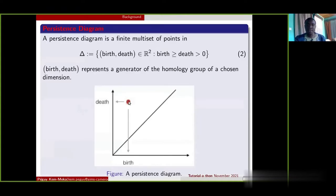So a point with its x coordinate and y coordinate represents a generator of the homology of the chosen dimension. Loosely speaking, a point represents a hole of a chosen dimension. And this persistent diagram is going to be one of the key elements of our methodology which is given as follows.